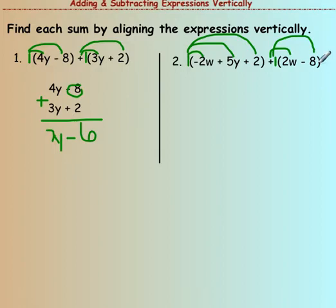I'll just get negative 2w plus 5y plus 2. But this 2w would go right underneath the negative 2w, and that negative 8 would go underneath the 2 because it's a constant. So there is no y term here.